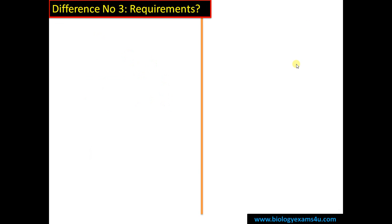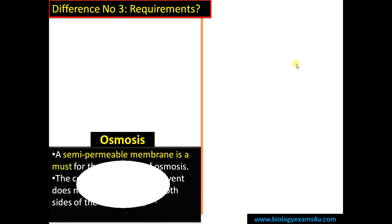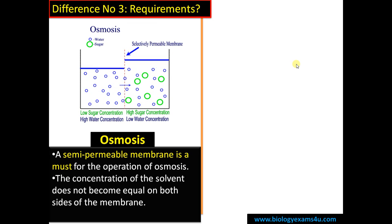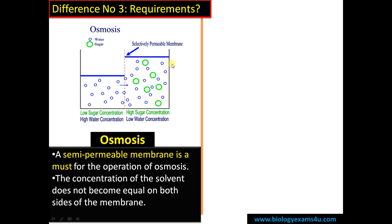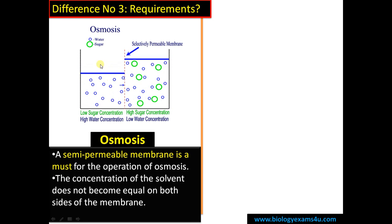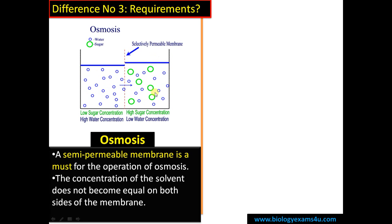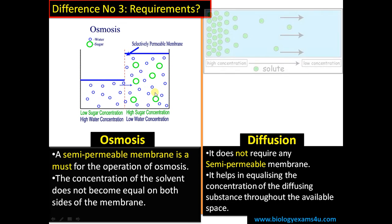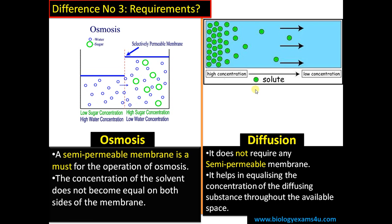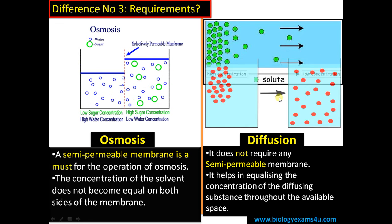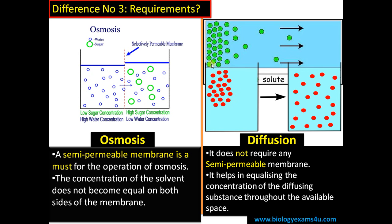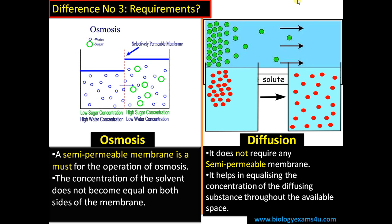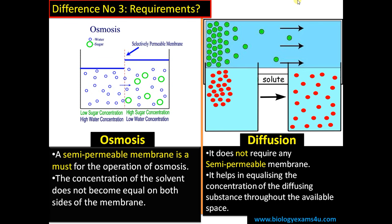Difference number three is regarding the requirements. In the case of osmosis, there must be a semipermeable membrane — in biological systems, it is the plasma membrane. After osmosis, the concentration of the solvent or water does not become equal on both sides. Whereas in the case of diffusion, it does not require a semipermeable membrane. After diffusion, the diffusing substance will be uniformly distributed. Just think of an ink drop in a solution — it will be uniformly distributed after some time.